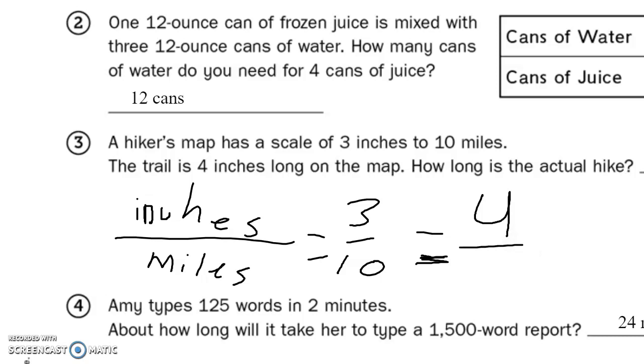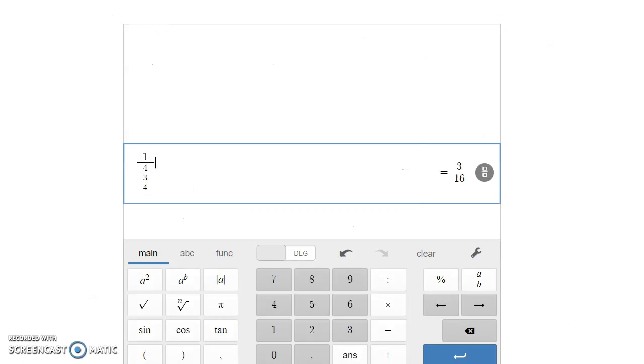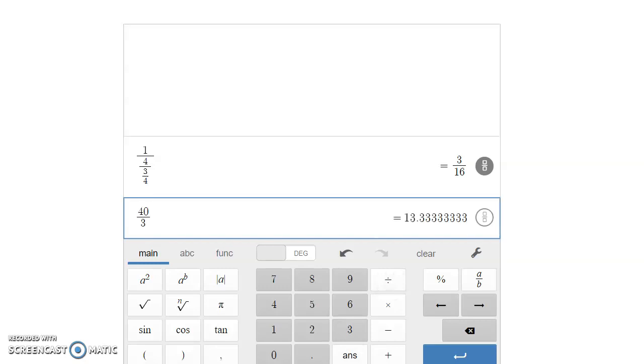What is 40 divided by 3? 40 divided by 3. 13.333. 40 over 3. Of course. 30 over 3. Let's do this. 13.3333333.